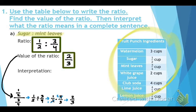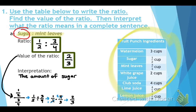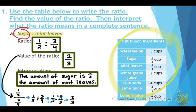Next we interpret what the ratio means. The amount of sugar is two-thirds — because that's the value of our ratio — two-thirds the amount of mint leaves.